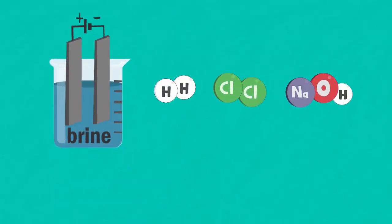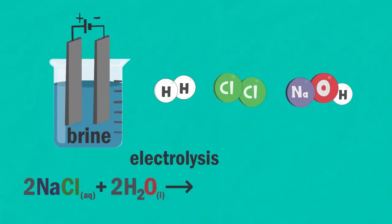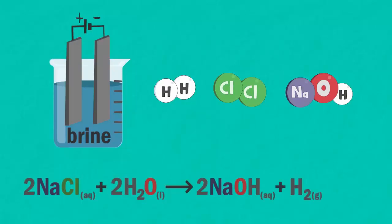And so we can write a summary equation. Concentrated sodium chloride solution plus water, when electrolyzed, gives sodium hydroxide solution, hydrogen gas and chlorine gas.